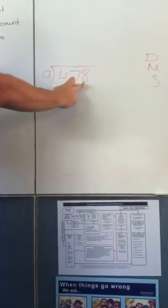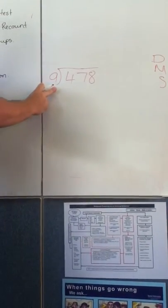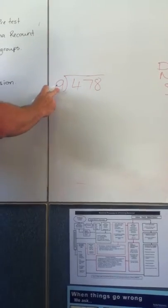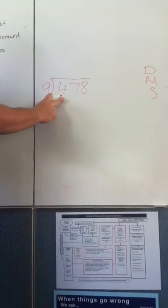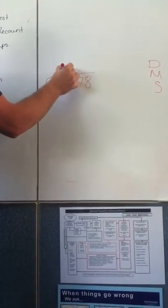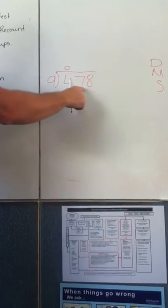Okay, so we've got 478 divided by 9. So our first step is to say, how many 9s in 4? Can we do that? No. Okay, so we put a 0. How many 9s in 47?